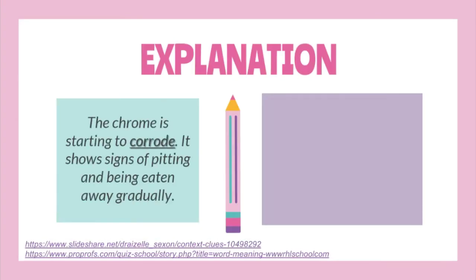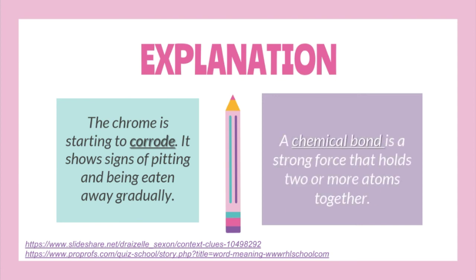Another example: 'The chrome is starting to corrode — it shows signs of pitting and being eaten away gradually.' The word corrode is described in this sentence; thus, corrode means to destroy or to weaken. And 'A chemical bond is a strong force that holds two or more atoms together.' Here, chemical bond is being defined as a strong force that holds two or more atoms together.